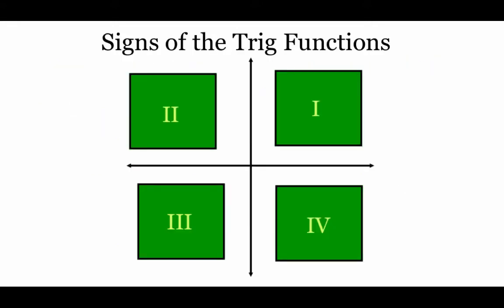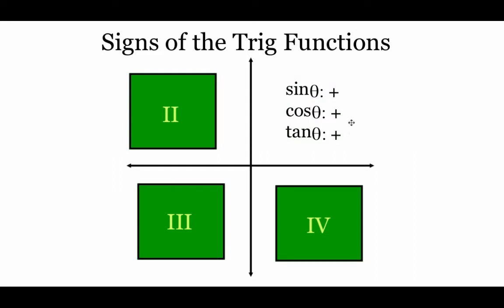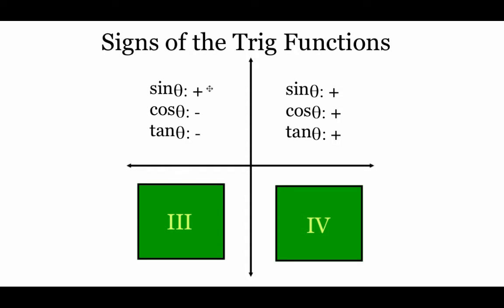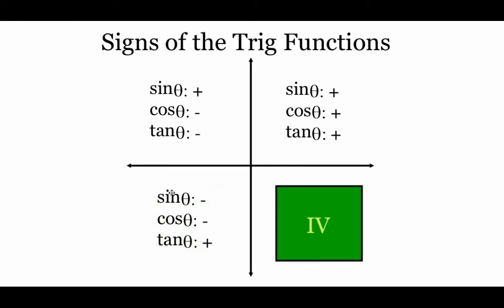The signs of our trig functions change depending on the quadrant. In the first quadrant, sine, cosine, and tangent are all positive since both x and y are positive. In the second quadrant, sine stays positive but cosine is negative, making tangent negative too. In the third quadrant, both x and y are negative, so sine and cosine are negative, but tangent is positive since two negatives make a positive.